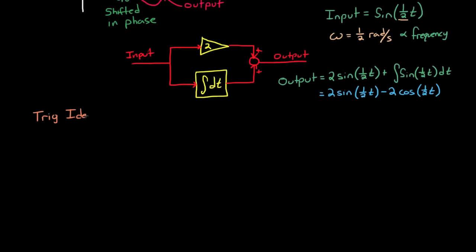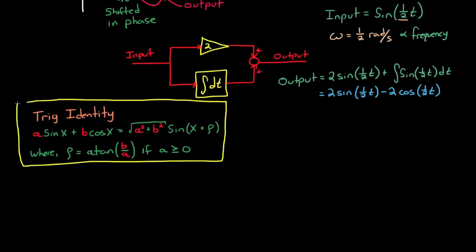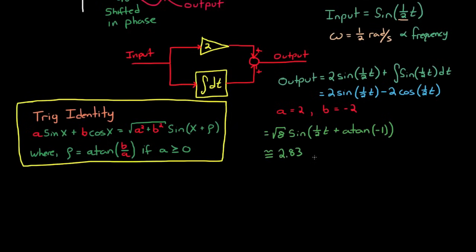Now in order to interpret this, we're going to need some help from some trig identities. The trig identity I'm going to use is: a·sin(x) + b·cos(x) equals the square root of a² plus b² times sine of x plus ρ, where ρ is equal to the arctangent of b over a. This is only true if a is greater than or equal to 0. Applying this to our problem: a is equal to 2 and b is equal to negative 2. So the change in amplitude of the sine wave is the square root of 2² plus 2² equals the square root of 8, times sine of ½t plus the arctangent of 2 over −2, which is the arctangent of −1. Written in decimal format, this is equal to 2.83 times sine of ½t minus 0.785 radians.